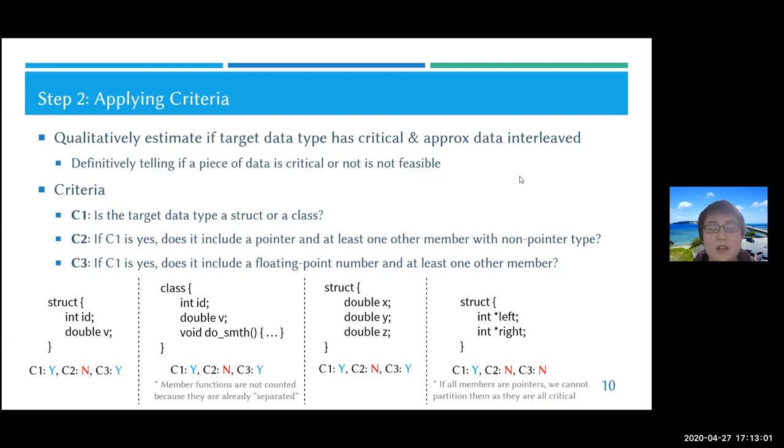C2 asks: if C1 is yes, does it include a pointer and at least one other member with non-pointer type? Because a pointer is most probably critical. If there's another member which might be approximate, this is a problem. C3 asks: if C1 is yes, does it include a floating point number and at least one other member? Because a floating point number is in many cases approximate, and if the other member is critical, this is a problem.